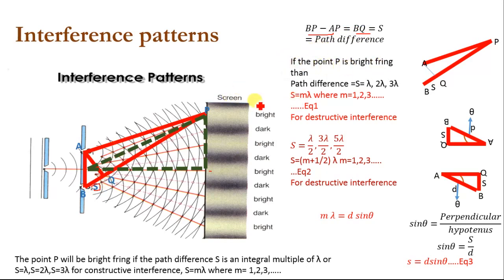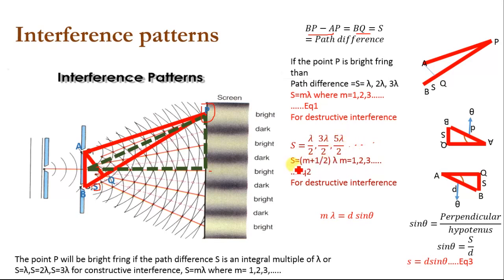If point P shows bright fringes, then the path difference S equals λ, 2λ, or 3λ, because constructive interference occurs only when the waves are in phase. When the waves are out of phase, we observe destructive interference. So the path difference for constructive interference is S = Mλ, where M equals 1, 2, 3. For destructive interference, S equals λ/2, 3λ/2, 5λ/2, and so on — that is, S = (M + 1/2)λ, where M equals 1, 2, 3. This is the path difference condition for destructive interference.